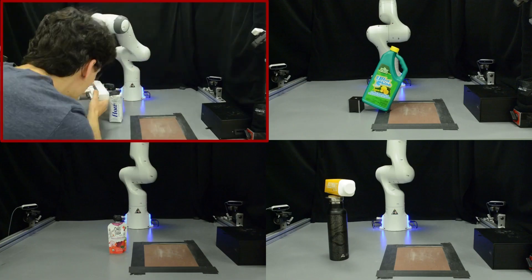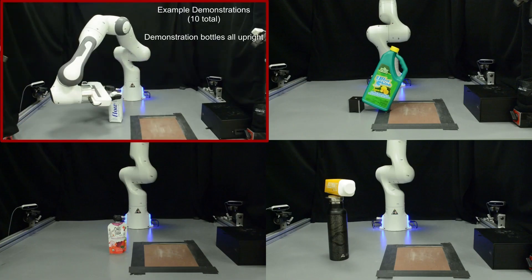The same can be seen in this task, where the robot must grasp the top of the bottle from the side and place it upright on the black shelf.